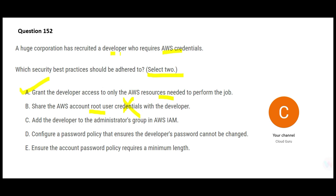Option C says give the developer administrator access so they can do anything. If a staff member comes to your house only to cook, you give them access to the kitchen — not your bedroom, bathroom, or balcony. So this is strictly wrong. Option D says create a policy that does not allow developers to change their password — this is also wrong, because passwords should be changed every three to six months; otherwise someone could hack the developer's password.